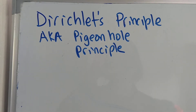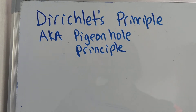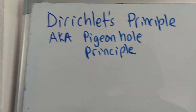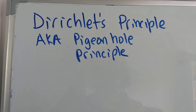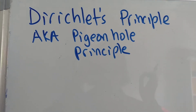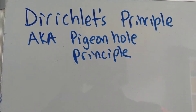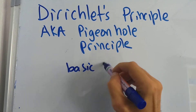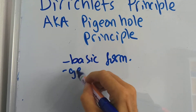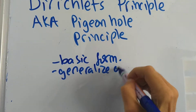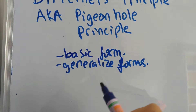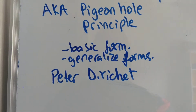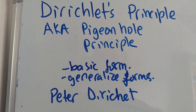Dirichlet's principle, also known as the pigeonhole principle — this is a big topic. There are countless competition problems involving this, so we have to just dive in. There are many forms of this. It was first used by Peter Dirichlet, a great mathematician, who used it to prove very difficult things in number theory.